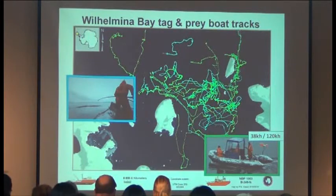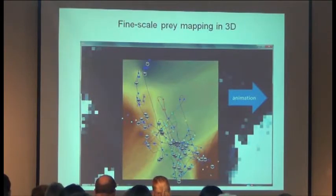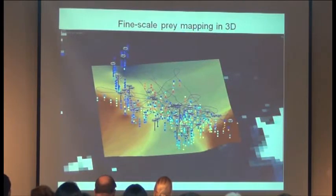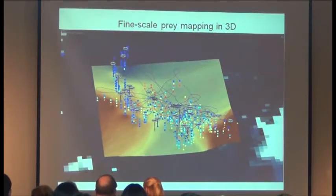Here we have the echo sounder flipped up while traveling, then flipped back down — those are the 38 and 120 kilohertz echo sounders. This is looking at tag data, DTAG data which Ari showed examples of, where the fluke symbols show where whales were diving. We can see the depths of the whale dives, and then the little points are looking at krill binned into depth ranges, showing the density and volume of krill at different depths. We're able to start creating near real-time maps showing where whales are moving, where they're feeding, and the actual prey distribution in 3D.